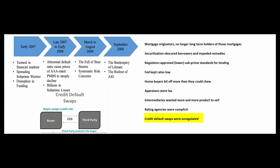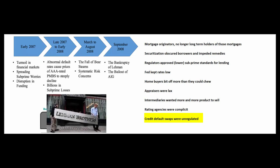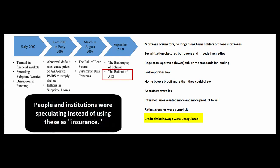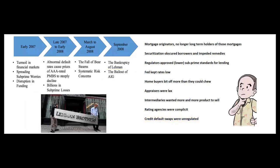Credit default swaps were unregulated. A lender wanting protection would enter a credit default swap — paying a small insurance premium in case the borrower defaults. AIG issued many of these. Unfortunately, people not even involved in the original lending transactions bought into these credit default swaps. When borrowers started to default, AIG, which had written many of these insurance policies, couldn't make payments and had to be bailed out by the federal government.